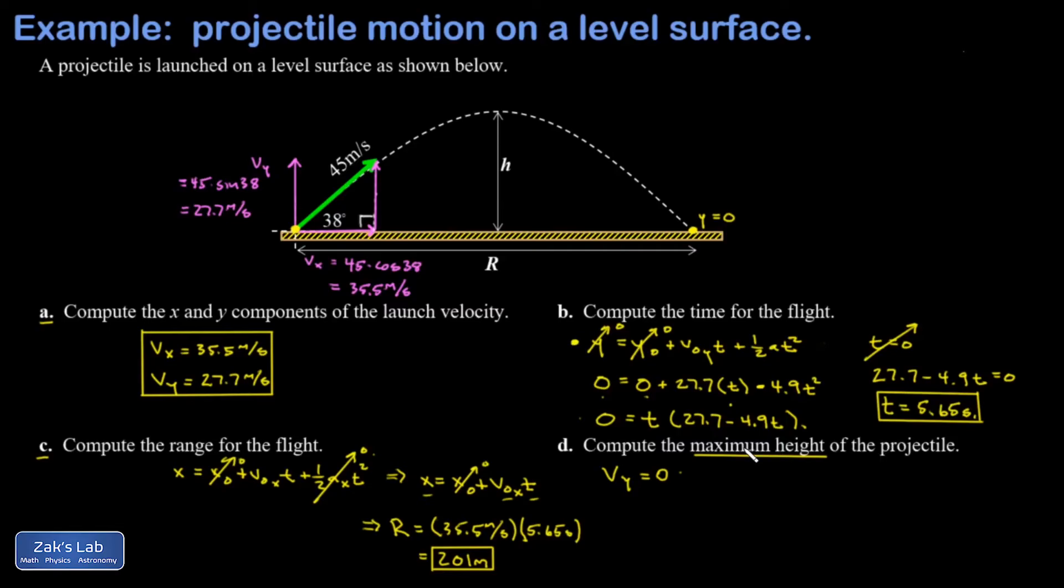You say Vy equals zero and then you ask what's the height at that point in time. Again we have options here. I could use the fact that Vy is equal to zero and find out what time it is and then plug that time into the height equation, or I could get more clever about it and look for another kinematics formula that doesn't involve time, and that's this one.